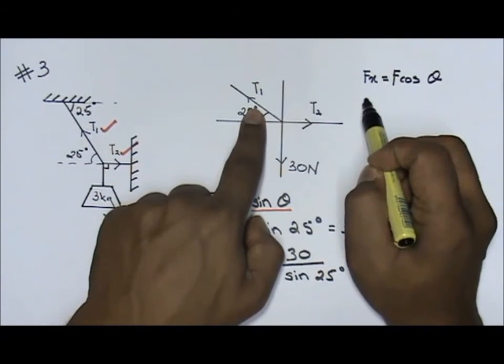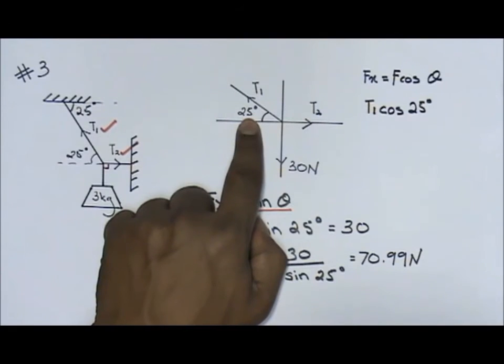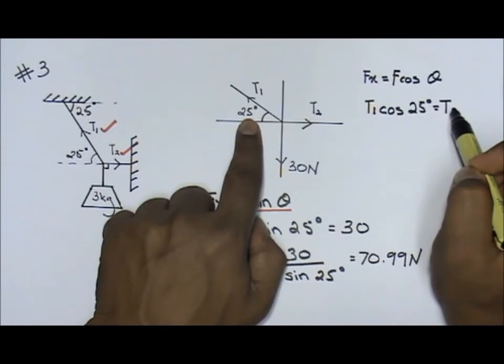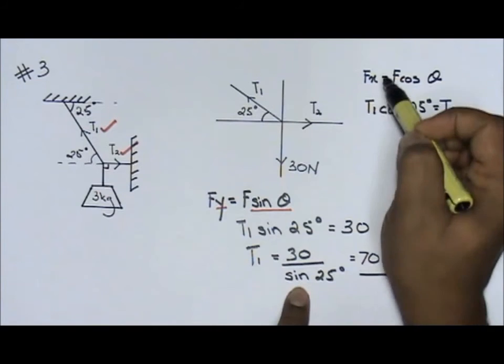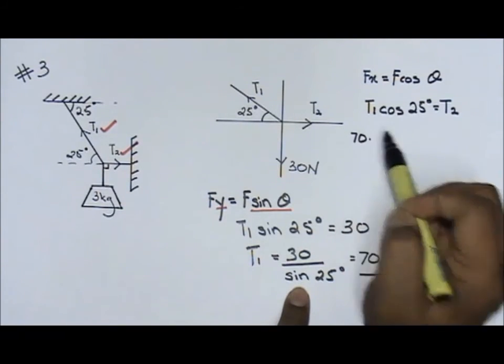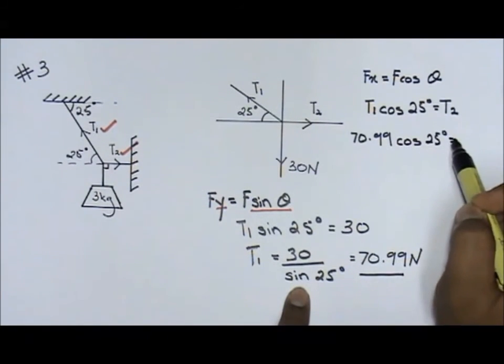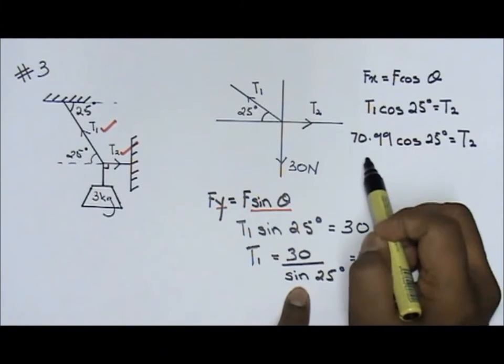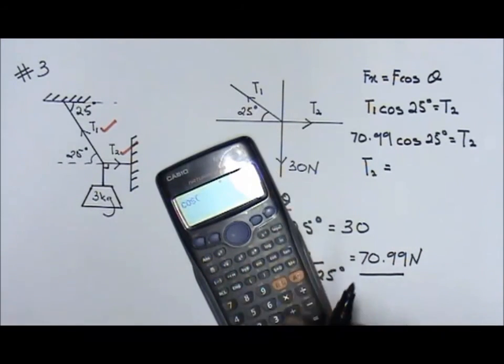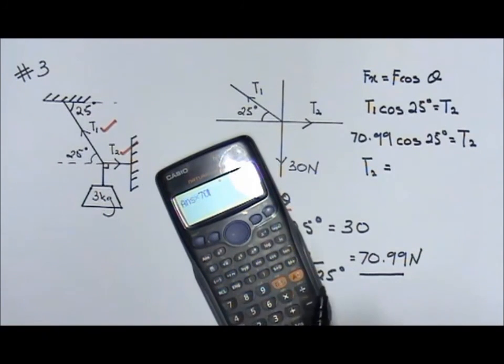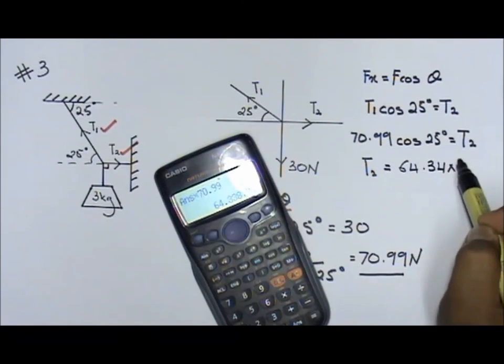So, now, your F, in this case, T1 going down, cos 25 equals to T2, because left equals to right. Now, your T1 value, what was it? 70.99. So, I just replace here, 70.99 cos 25 degrees equals to T2. That means T2, to solve it, cos 25 times 70.99. And the answer is 64.34 newtons.